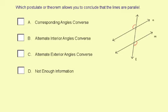The two angles that are marked congruent are on alternate sides of transversal T, and they're outside lines N and M. So they are alternate exterior angles that are congruent. Therefore, the reason is the alternate exterior angles converse.